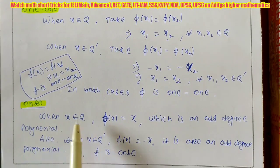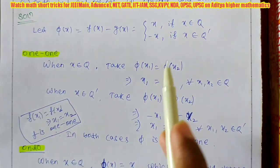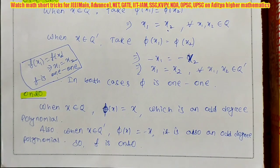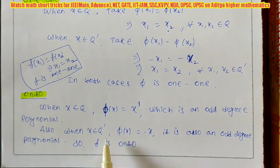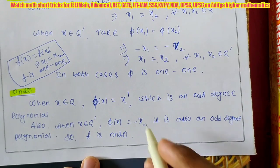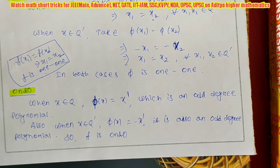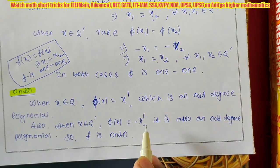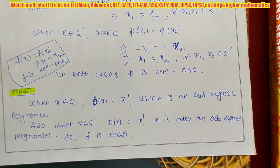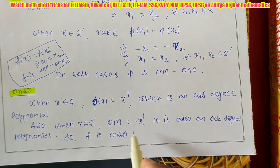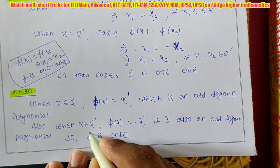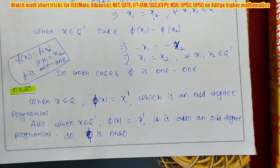Next we check whether φ is onto. When x ∈ Q, φ(x) = x, which is an odd-degree polynomial (degree 1). When x ∈ Q', φ(x) = -x, which is also an odd-degree polynomial. In my short-trick video I explained that when a function is an odd-degree polynomial, it is always onto regardless of its domain. Since both cases give an odd-degree polynomial, φ is onto.